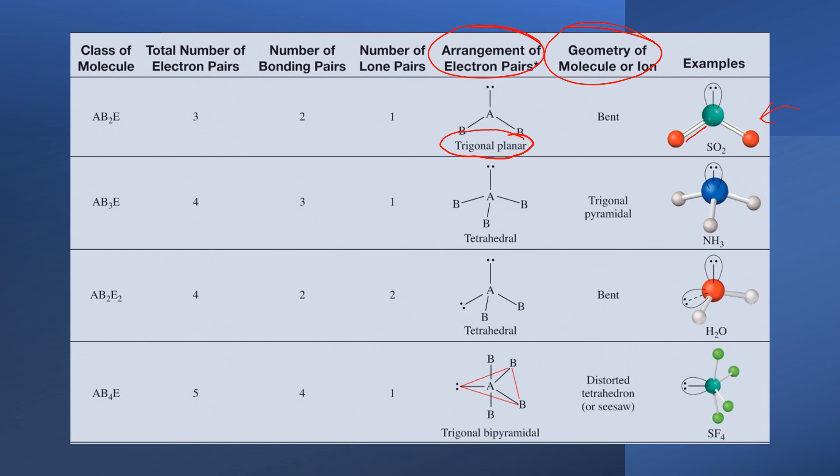However, if we just focus on the molecular geometry, we have something that is called bent. Notice the bent geometry when we look at only the atoms, not the lone pair.